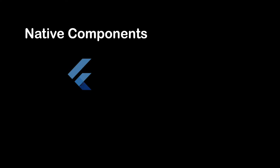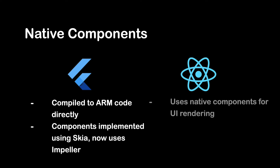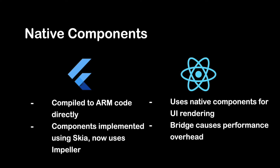Next, native components. Flutter compiles to native code directly, and its UI components are implemented using the Skia Graphics Engine, and recently has changed to Impeller. This can result in a more consistent look and feel across different platforms. While React Native utilizes native components for UI rendering, which can be advantageous as it leverages the native platform capabilities, it may also introduce some performance overhead due to the communication bridge.